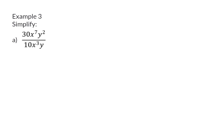In example 3, we are now going to divide, but still we need to simplify the sign, the constant, and the variables. In this case, we have a plus divided by plus, which is positive. For the constant, we have 30 divided by 10, and that will give us a constant of 3. Lastly, we need to simplify the variables. For the variable x, we are going to use our exponential law which states that when we divide, we take the exponents and we subtract them to get x to the power of 4. The same happens with the variable y, where we have the exponents 2 and 1, and when we subtract them, we end with y to the power of 1.